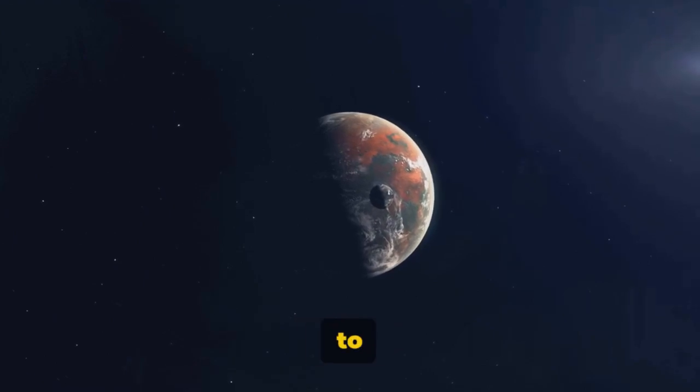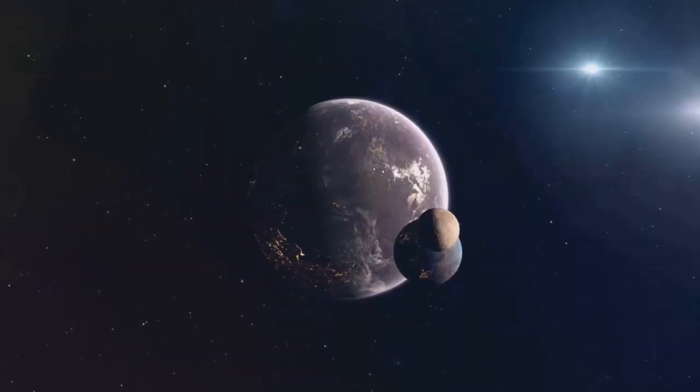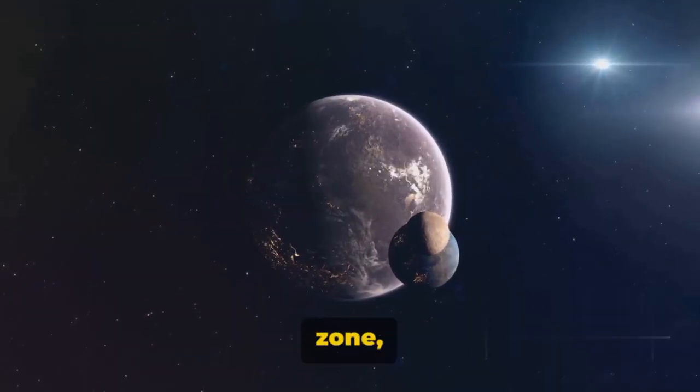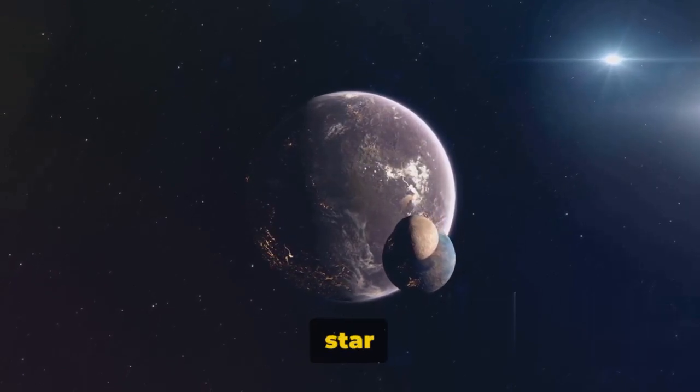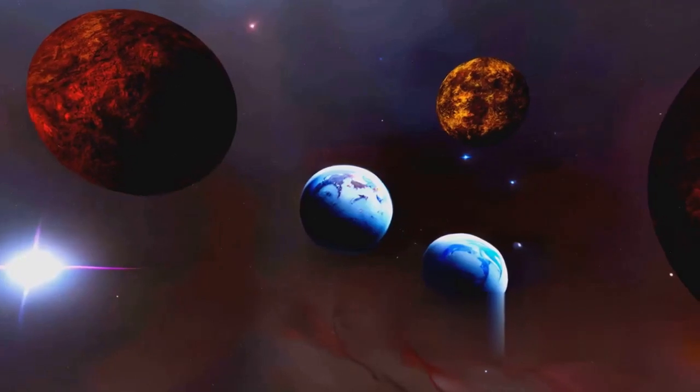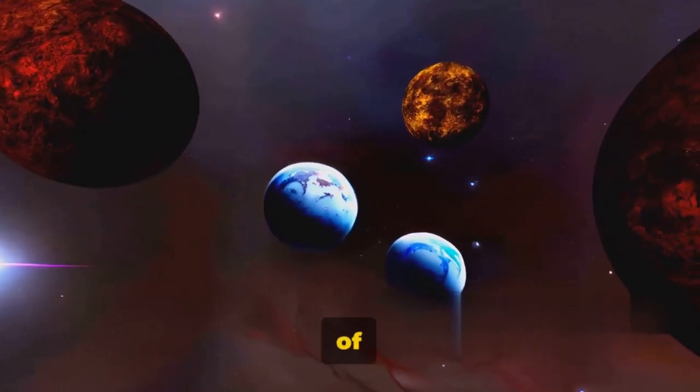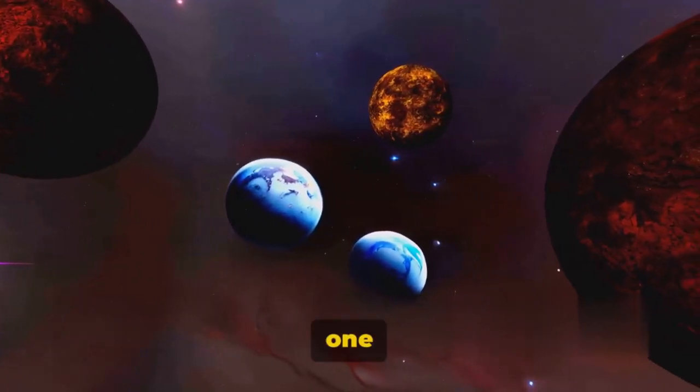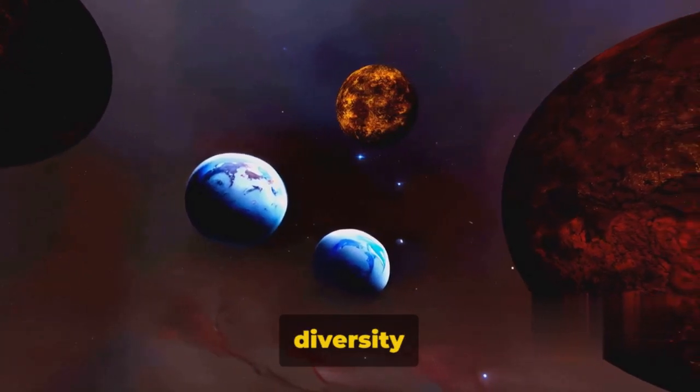Is it a rocky world akin to Earth or a gas giant like Jupiter? Does it reside in the Goldilocks zone, that perfect distance from its star where conditions might just be right for life as we know it? We've already discovered over 4,000 of these distant worlds, each one a testament to the vastness and diversity of our universe.